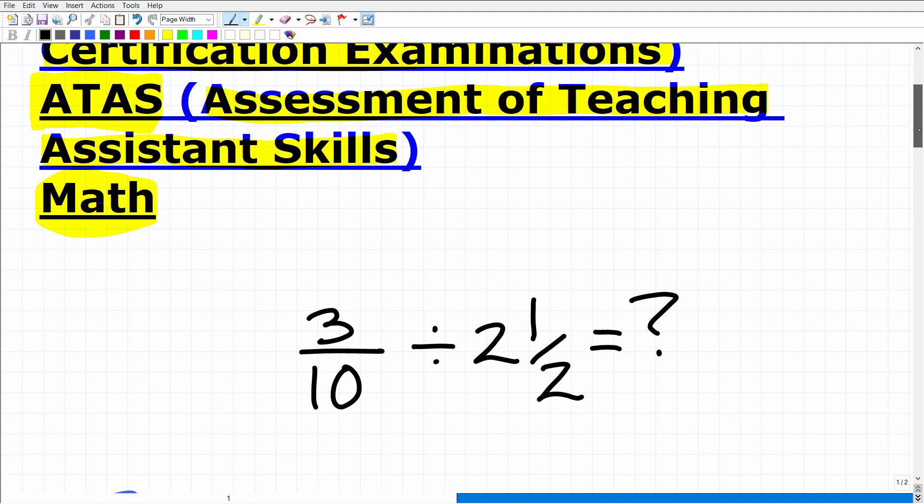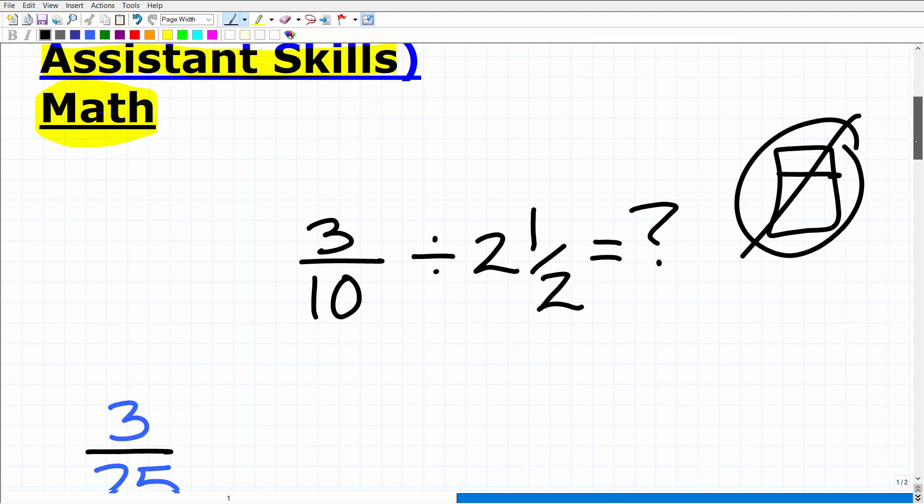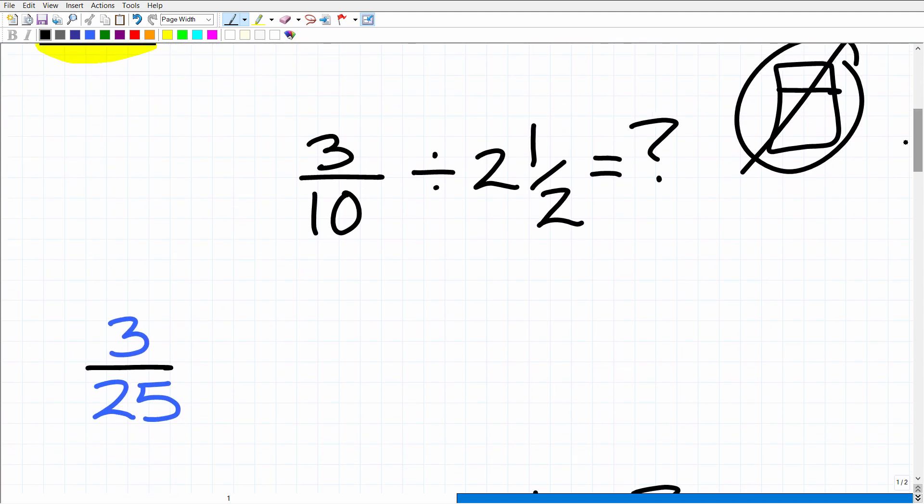Let's go ahead and get into the problem now. Here we have 3 tenths divided by 2 and 1 half. We're going to put our calculators away and fully simplify the answer. So the answer is 3 over 25. Now if you got that right, that's excellent. If you didn't get this right, the whole objective of this video is just to give you some feedback.